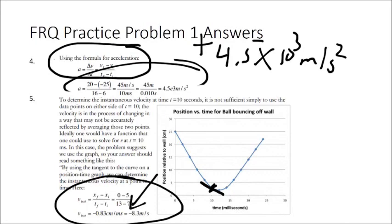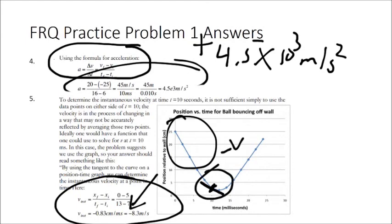The last part asks for instantaneous velocity at t equals 10 milliseconds. To find instantaneous velocity from a position-time graph, draw a tangent line that touches the graph at only that point (10 milliseconds), then find the slope of that tangent line using two points on it. The result is about negative 8.3 meters per second — at 10 milliseconds the object is still moving to the left, but it has already slowed down from its initial negative 25 meters per second because it's in contact with the wall with a positive acceleration.